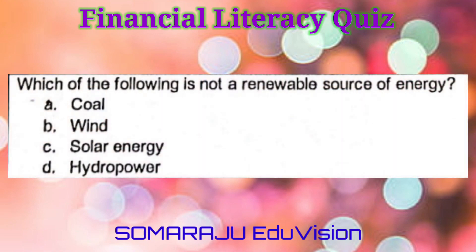Question number nineteen: Which of the following is not a renewable source of energy? A. Coal, B. Wind, C. Solar energy, D. Hydro power. The correct answer is A. Coal.